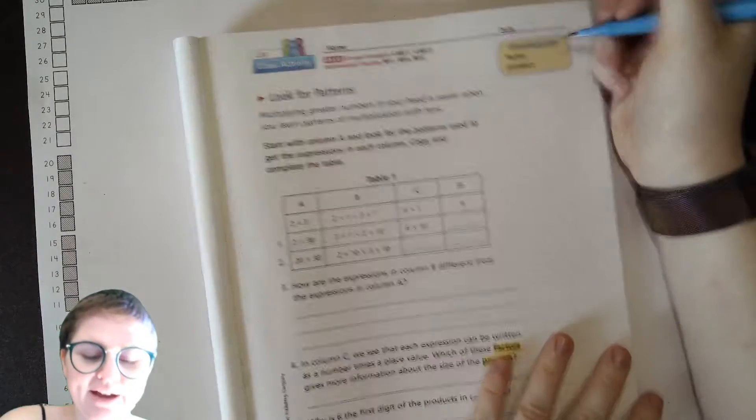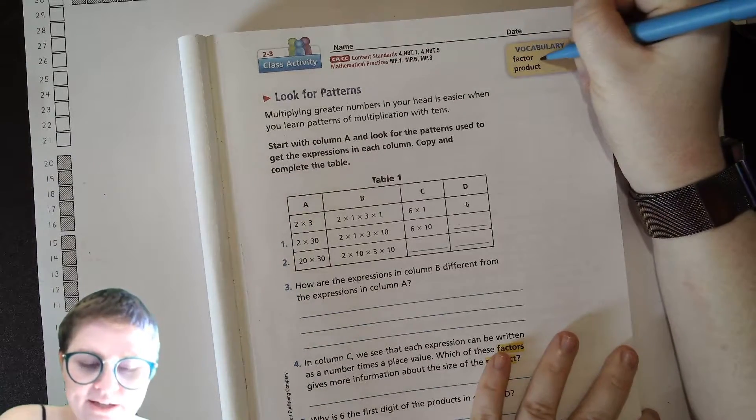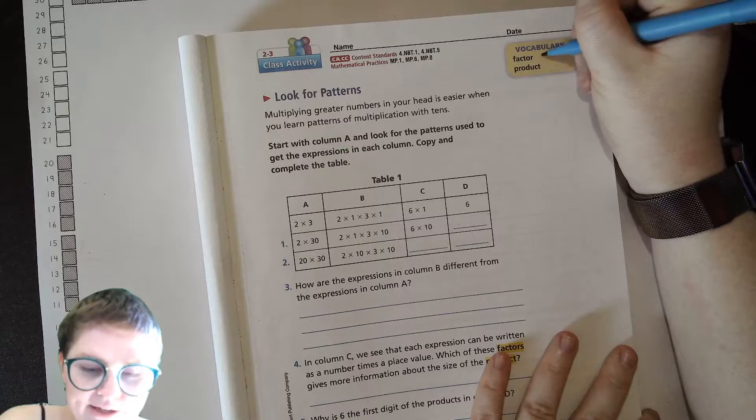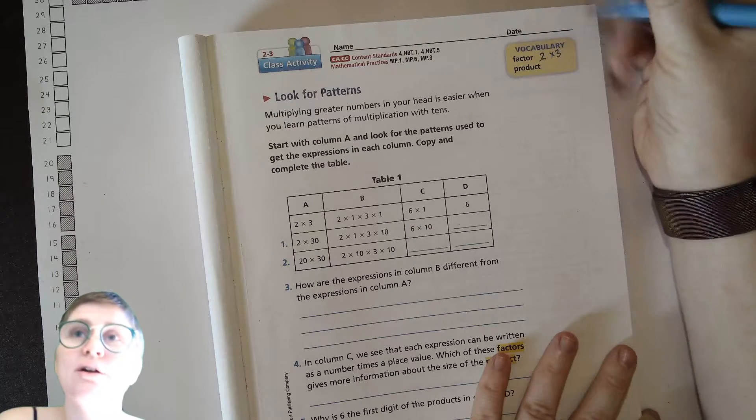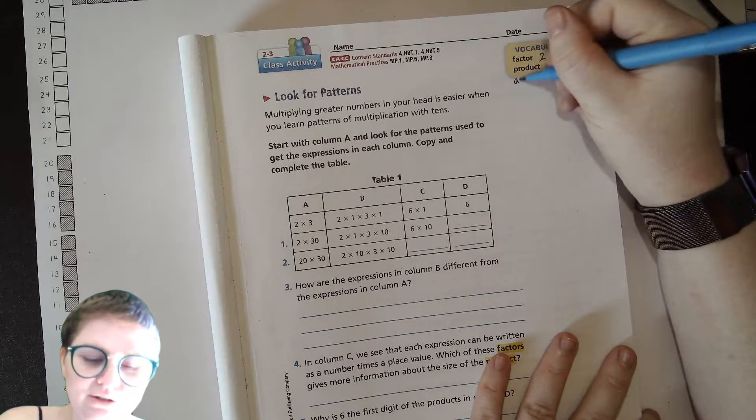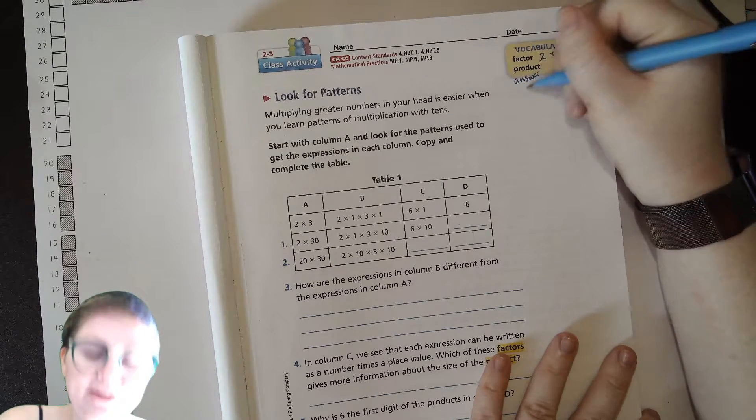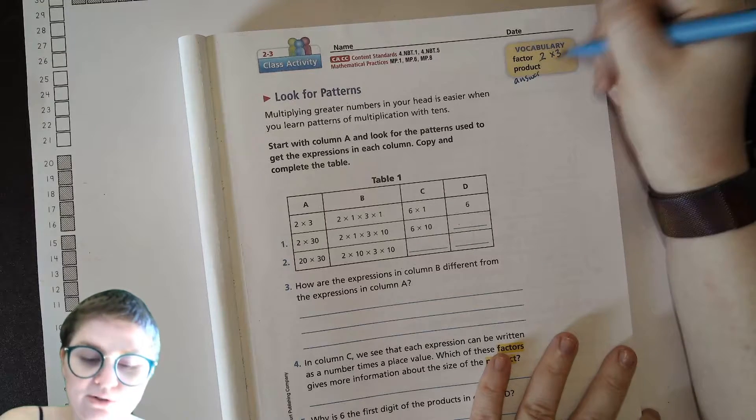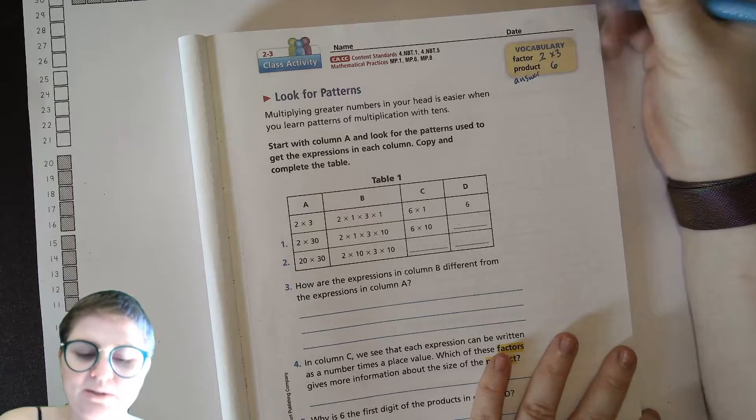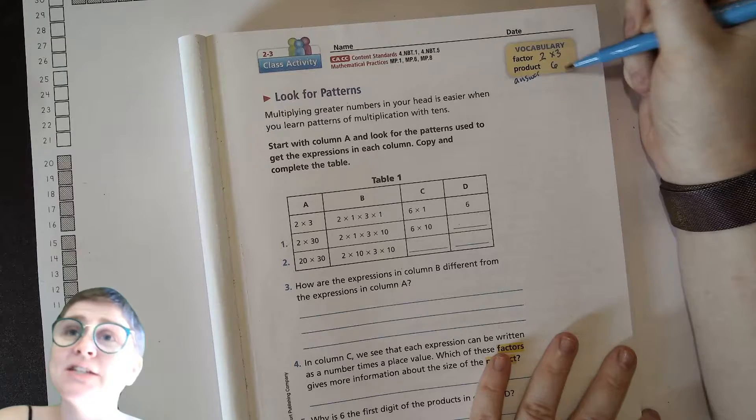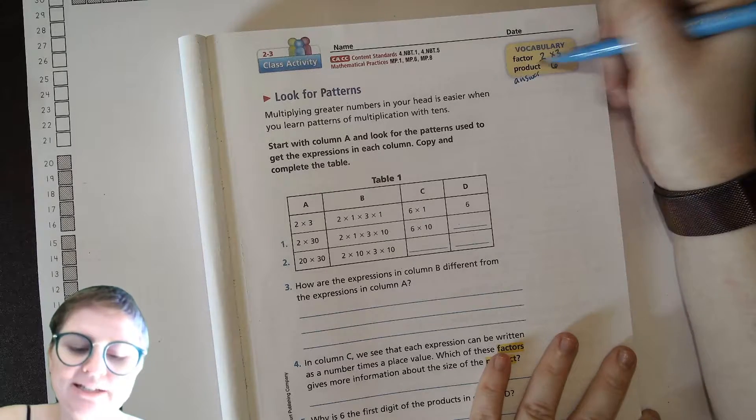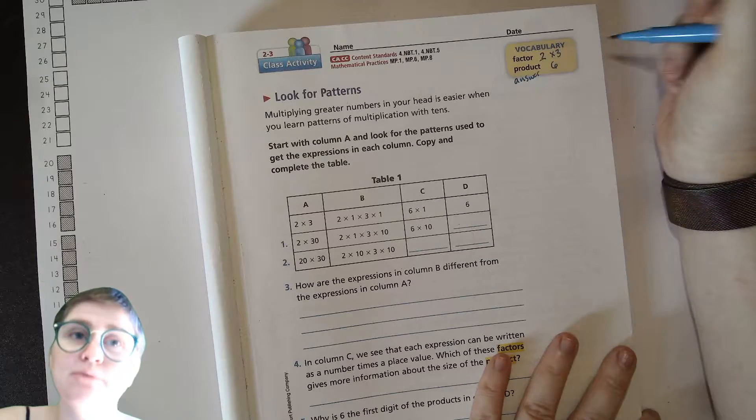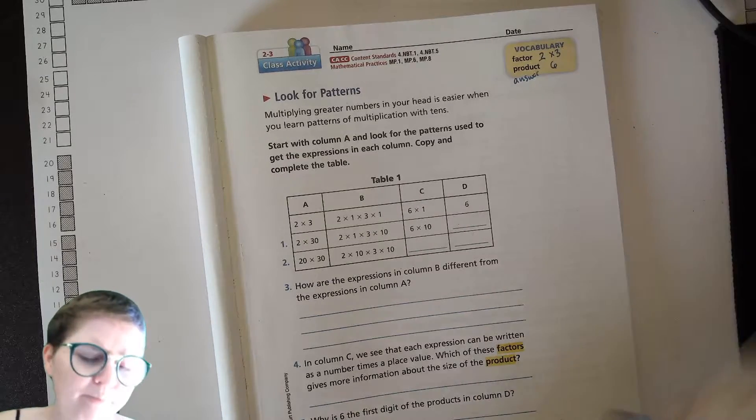Just a reminder, the factors are the things that you multiply, so like 2 times 3, those are the factors. And your product is your answer in multiplication, so for this one it would be like 6. So you would say factors of 6 include 2 and 3, or 6 is the product of 2 times 3. Just be comfortable using that academic language.